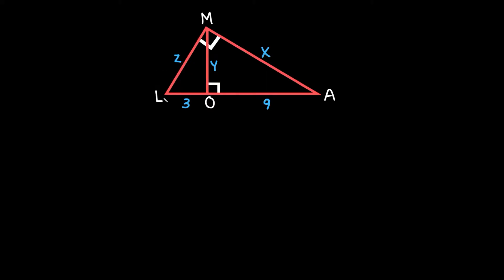So as you can see we have a right triangle right here — triangle LMA — and we're given that we need to solve for these three missing side lengths: X, Y, and Z. And we're given two side lengths, three and nine down here.